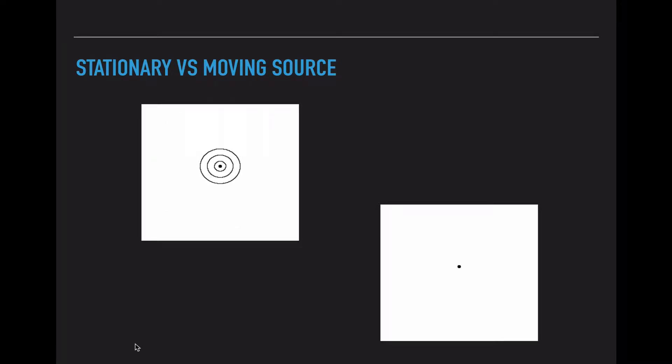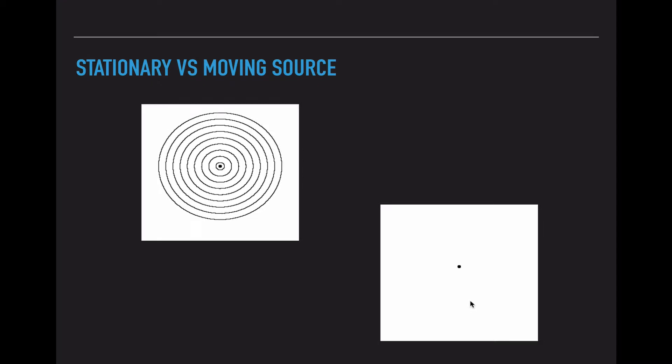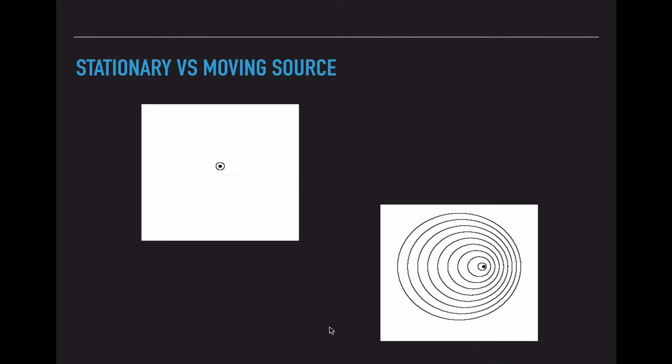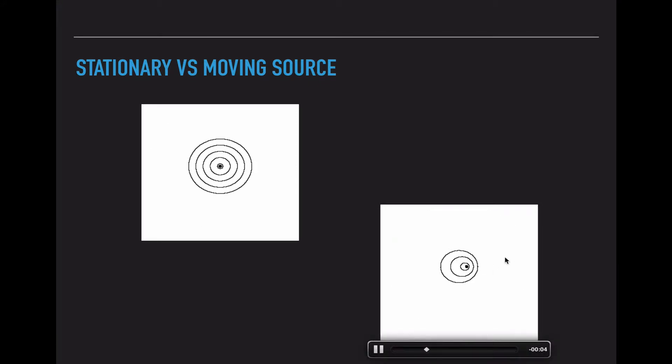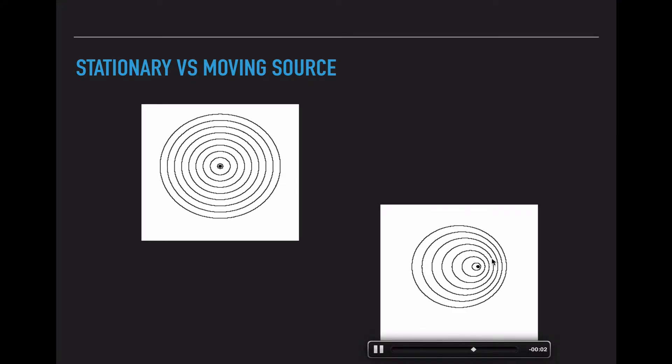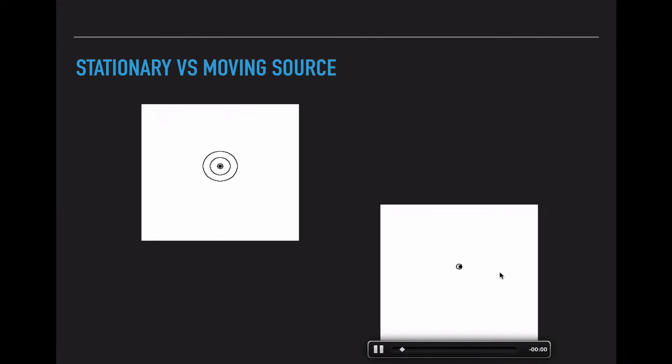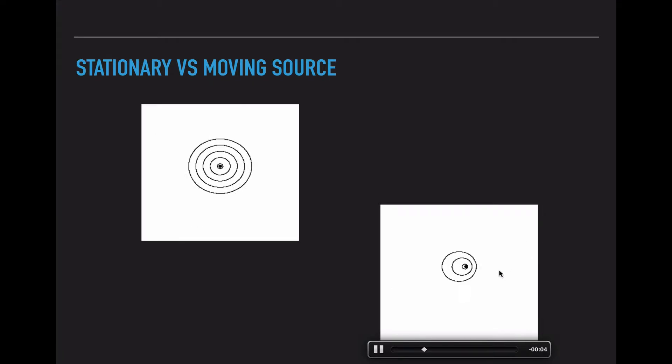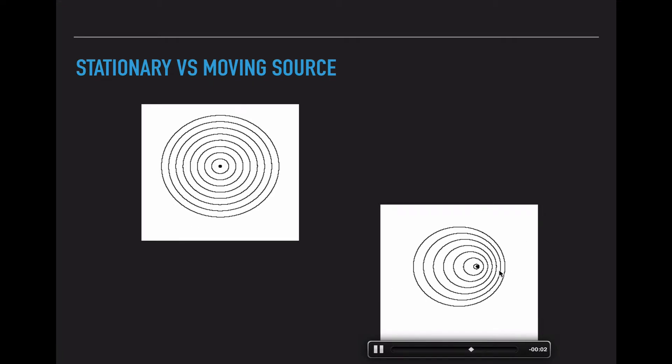Now if the source starts moving, that's going to slightly change this diagram. So down here I'm going to go ahead and click this video, and it's going to start moving from the center to the right of the screen. So as it moves, on the right hand side, our wave crests actually get a little bunched up. The wavelength becomes smaller because the source is moving towards that crest every second.